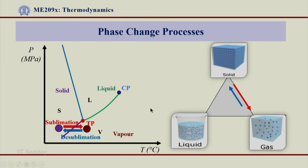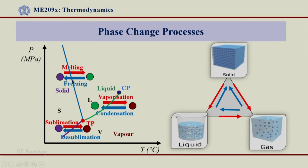All these processes of phase change occur across the phase change lines — solid-liquid, liquid-vapor, and solid-vapor — the three lines of this crooked Y. So I have shown all three processes: melting, freezing, vaporization, condensation, sublimation and desublimation, occurring from solid to liquid, liquid to vapor, and solid to vapor regions respectively. All this can also be seen in the triangle, but it is important to understand that these processes happen across the phase transition lines which are demarcated. All these phase change processes involve latent heat, and during these phase changes they go through a two-phase mixture, as we had seen earlier in the phase diagram of water.